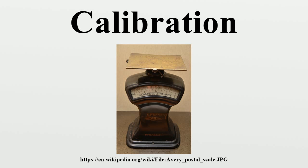The measurable quantities may differ in two devices which are equivalent. The device with the known or assigned correctness is called the standard. The second device is the unit under test, test instrument, or any of several other names for the device being calibrated.